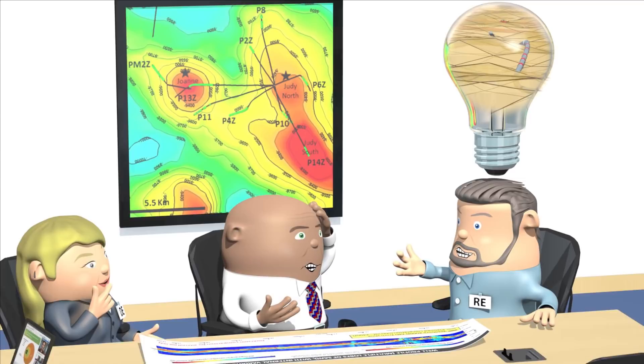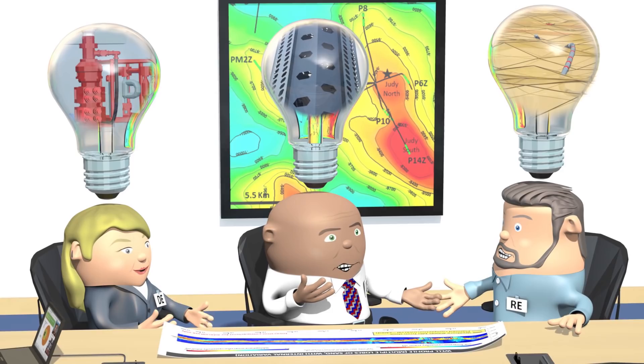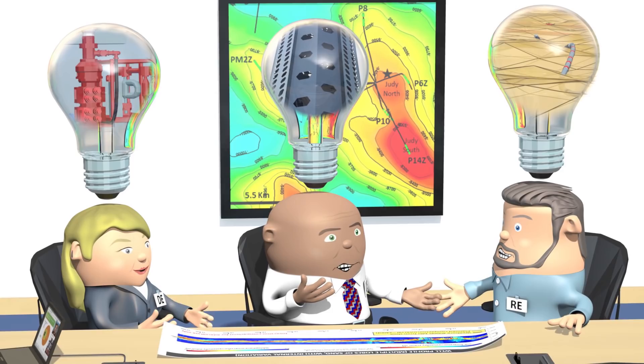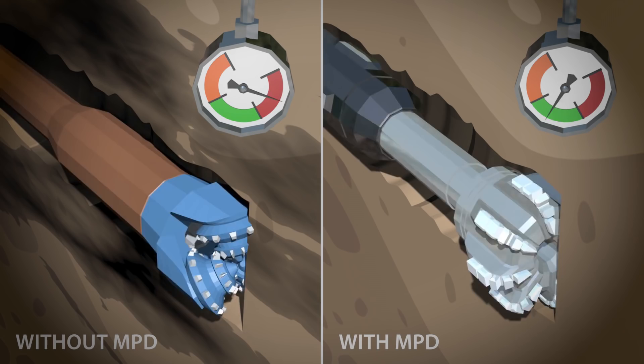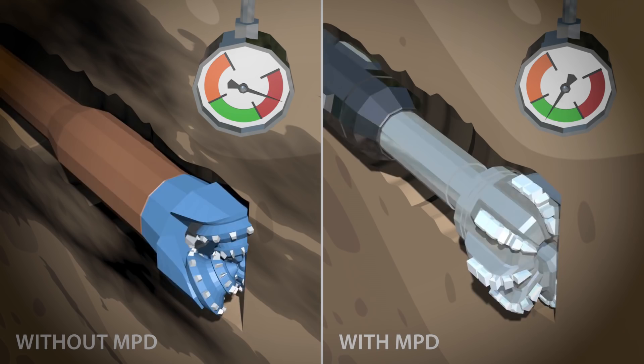To be able to drill and complete the wells successfully, we would need to control the well pressure within a very tight window. Too much pressure would damage the reservoir and cause drilling problems. Too little pressure and the well bore would collapse. The solution was to use managed pressure drilling to accurately control the well pressure.